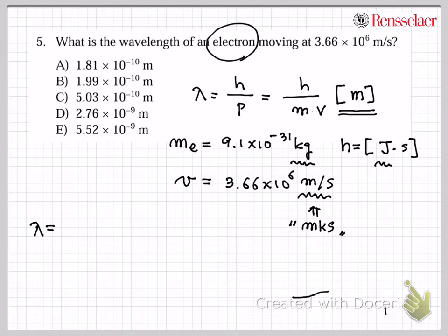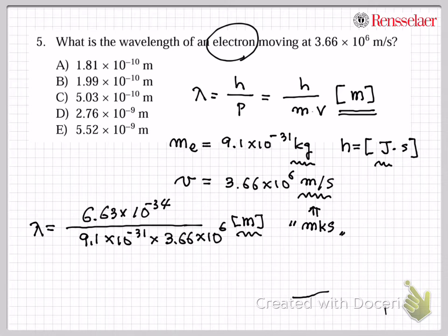So you will get a unit in the unit of meter. So let's plug in the numbers. So lambda is, just know everything is an MKS unit. So 6.63 times 10 to the minus 34. And mass is 9.1 times 10 to the minus 31. And v is 3.66 times 10 to the 6. And you will get the unit as a unit of meter.